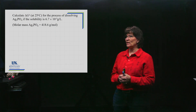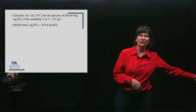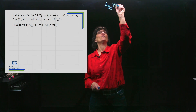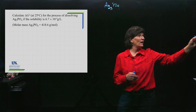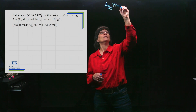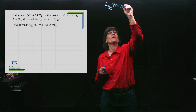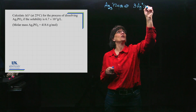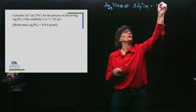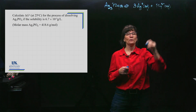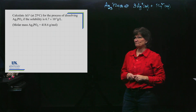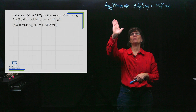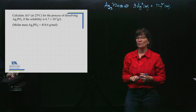We're going to calculate the standard delta G for the process of dissolving silver phosphate at 25 degrees Celsius. Ag₃PO₄ is an ionic compound — a solid. We're dissolving it into water, and not very much dissolves. It's a highly insoluble salt, but a little bit dissolves. If I can determine the K of this equilibrium, then I can determine the standard delta G using delta G° = -RT ln K.